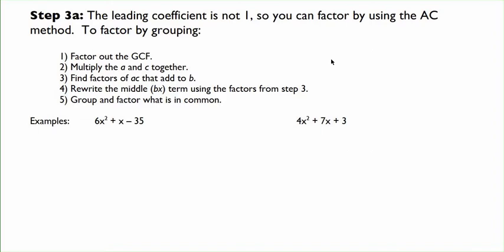The reason it's called the AC method is because our first step, after of course factoring out any greatest common factors, will be to multiply the a and c values together. So in this case, I will multiply 6 times negative 35. And when I multiply those two together, I get negative 210.